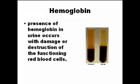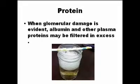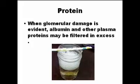Hemoglobin in the urine occurs when there is hematuria, with damage or destruction of functioning red blood cells. Normally, there is no protein in the urine. When there are glomerular problems, albumin and other proteins can be filtered into the urine.